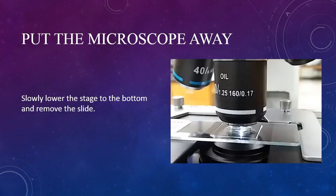After we've made our observations and finished our work with the microscope, we still need to put it away. We begin by using the coarse focusing knobs to lower the stage. Go slowly, just in case you go up instead of down — you can catch it before damaging the lens or the slide.